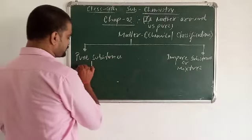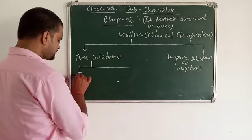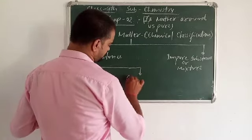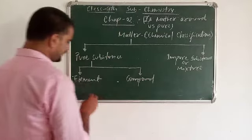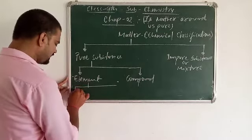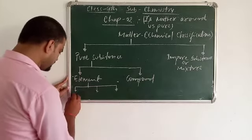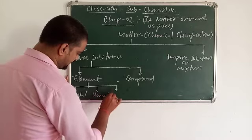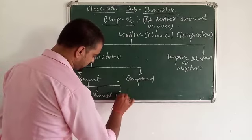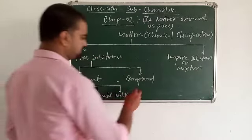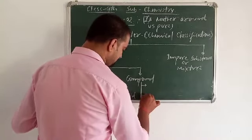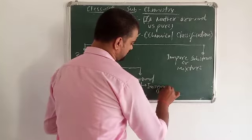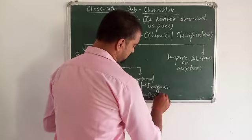Again, pure substances are classified into two major parts: element and compound. Elements are of three types: metal, non-metal, and metalloid. Compounds are of two types: first one is inorganic compound, and second one is organic compound.